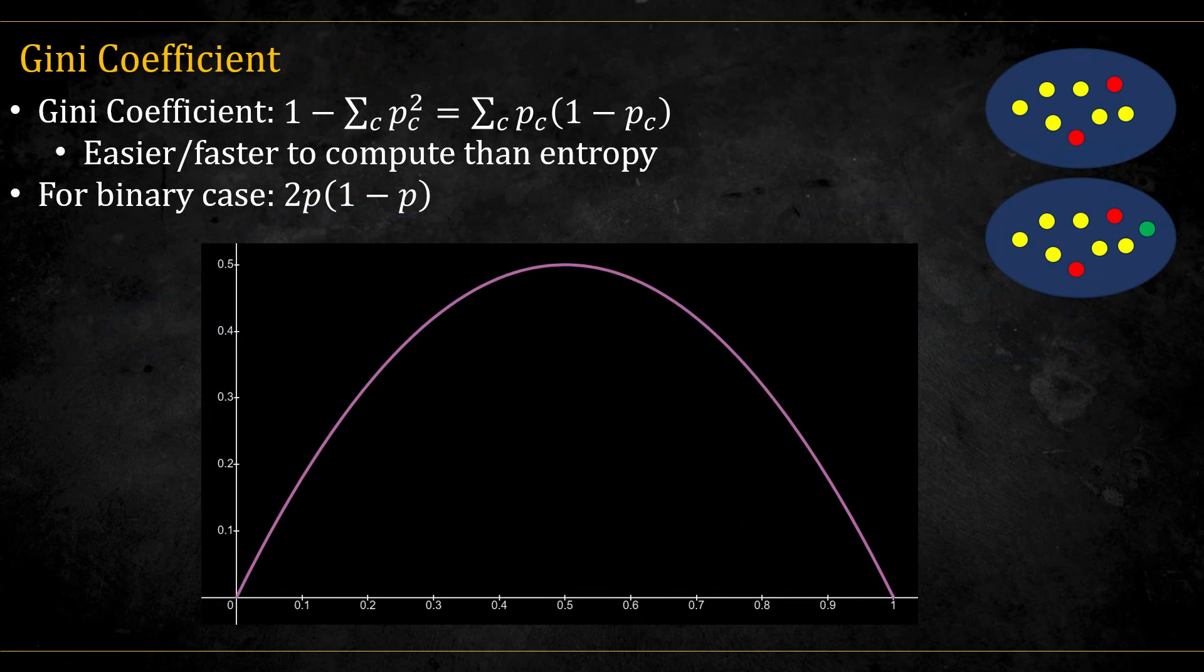There are two options, the genie coefficient or the entropy. The genie is defined like this. It is generally faster to compute than the entropy. Here you can see the graph for the binary case. Notice that it's an upside down parabola reaching maximal impurity at 0.5.